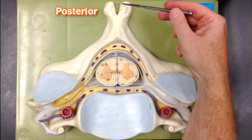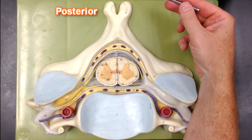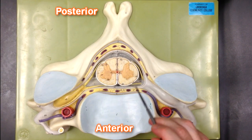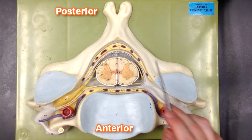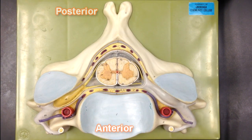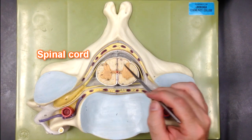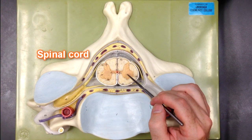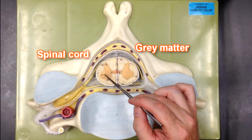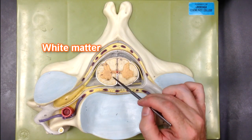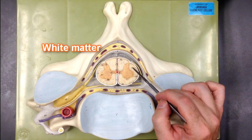This would be posterior where the spinous process is, and this would be anterior. Some of the structures we can see on this model: this is the spinal cord, this is gray matter here, and this is white matter here.